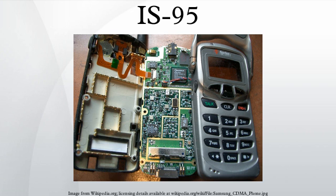BTSs transmit a sync channel spread with Walsh code 32. The sync channel frame is 80ms long, and its frame boundary is aligned to the pilot. The sync channel continually transmits a single message — the sync channel message — which has a length and content dependent on the P-REV. The message is transmitted at 32 bits per frame, encoded to 128 symbols, yielding a rate of 1200 bits/s. The sync channel message contains information about the network, including the PN offset used by the BTS sector.